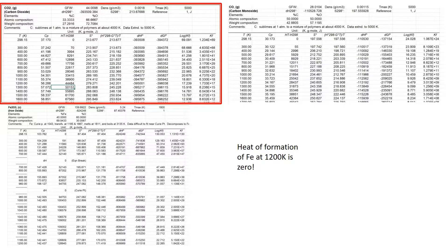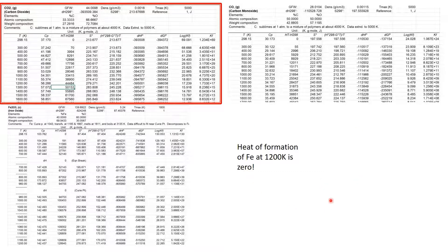Here are the thermodynamic tables we need: CO2, CO, and hematite — all generated from the Altered Freed table Excel generator on Blackboard. I could include the iron table, but to save space: the heat of formation for iron at 1200 K is zero. Iron is a solid at 1200 K and is still in its standard state, so we take its heat of formation to be zero.